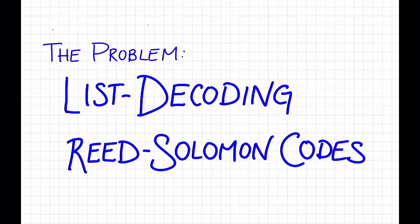In this video, we'll set up the problem that we'll solve in the next two videos: list decoding Reed-Solomon codes up to the Johnson bound.